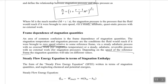An area of common confusion is the frame dependence of the stagnation quantities. The stagnation temperature and stagnation pressure are the conditions the fluid would reach if brought to zero speed relative to some reference frame. If an object is moving in space and a fluid hits it, the velocity of both is zero relative to each other at that instant. Depending on the speed of the reference frame, the stagnation quantities will take different values.